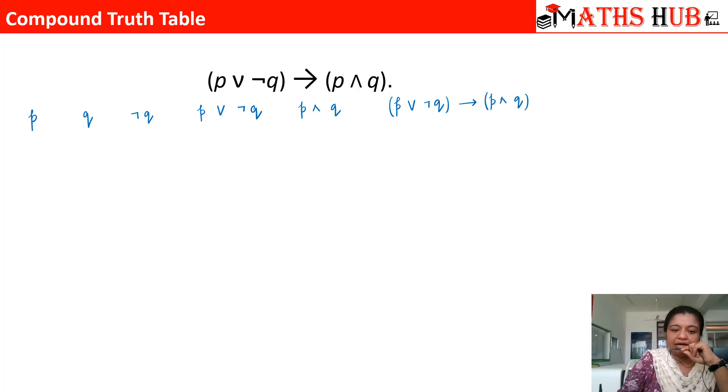And finally we have p or negation q implies p and q. Now let us fill in the truth values. Both the statements can be false. One of them can be true and one can be false, or both the statements can be true. Whenever q is false, negation q is going to be true, and whenever q is true, negation q will be false.